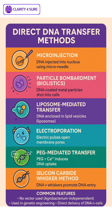Next is the silicon carbide whisker method. In this method, cells are vortexed with silicon carbide fibers and DNA. The fibers puncture the cell wall, allowing DNA to enter. It's simple but can damage cells.